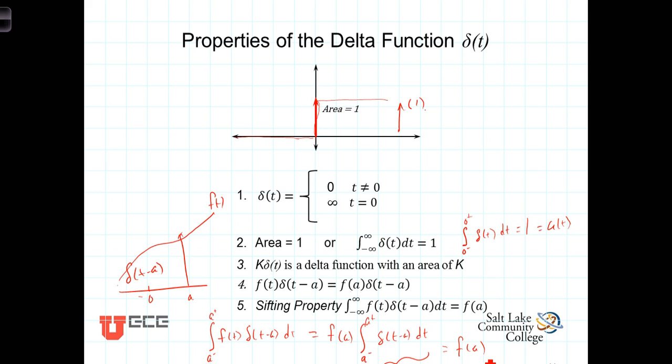We're going to use this later on in your signals and systems, when you get into digital signal processing. We're going to use this process, this sifting property, to actually sample f of t at values of time a, and so on. Thus, what we've got here is the value of that function at t equals a.